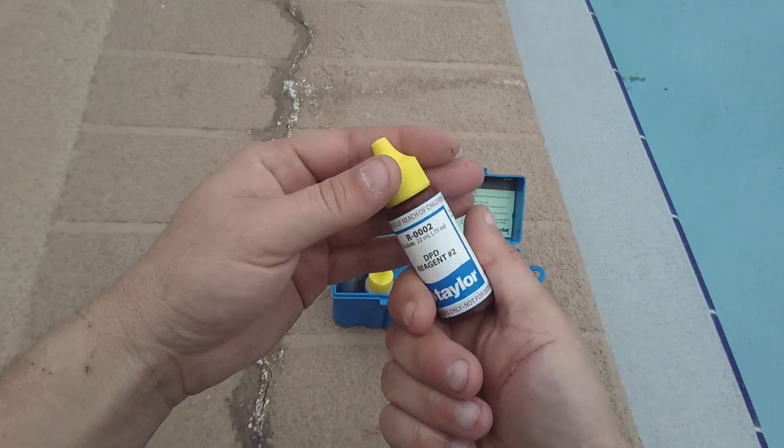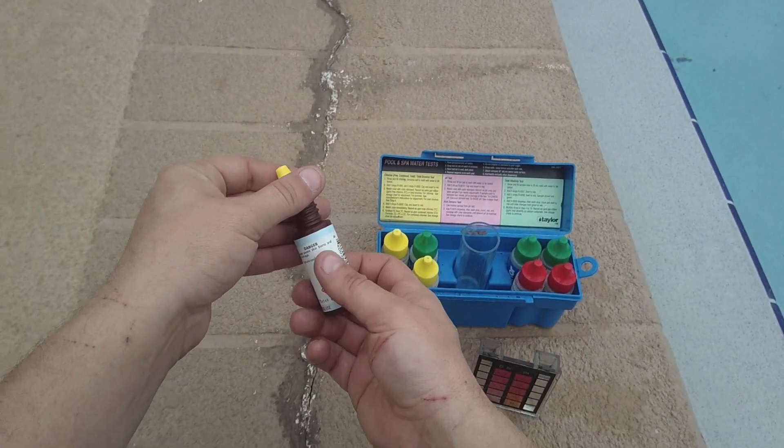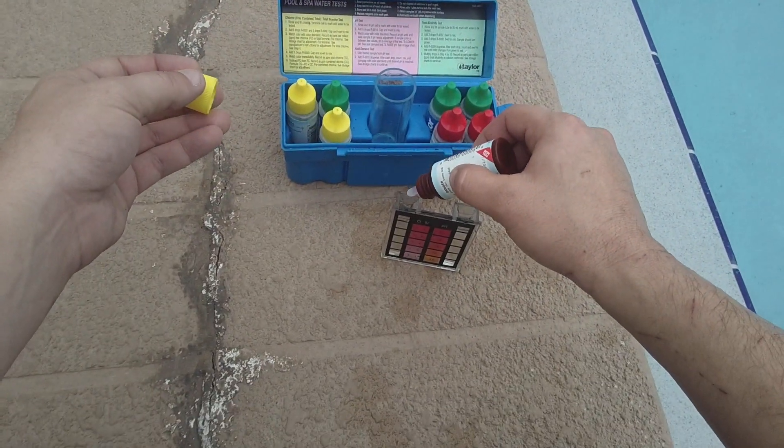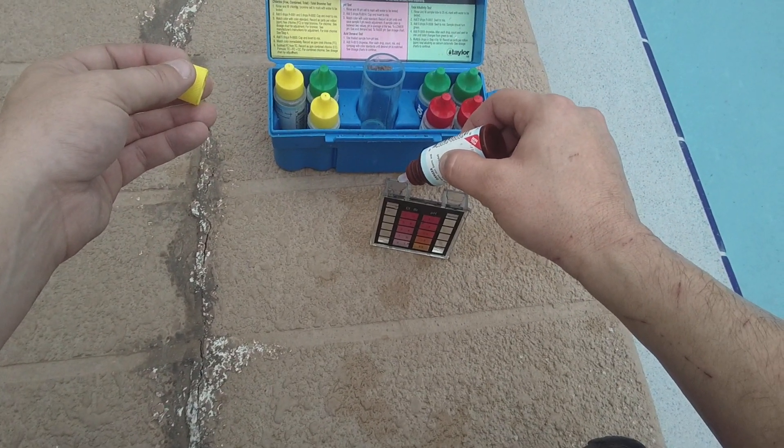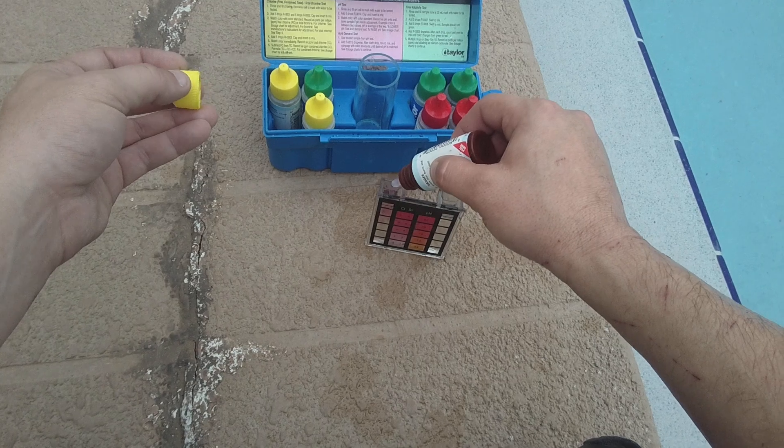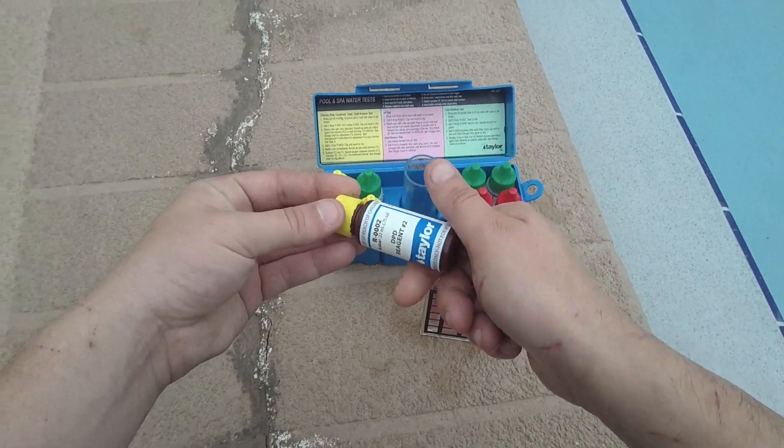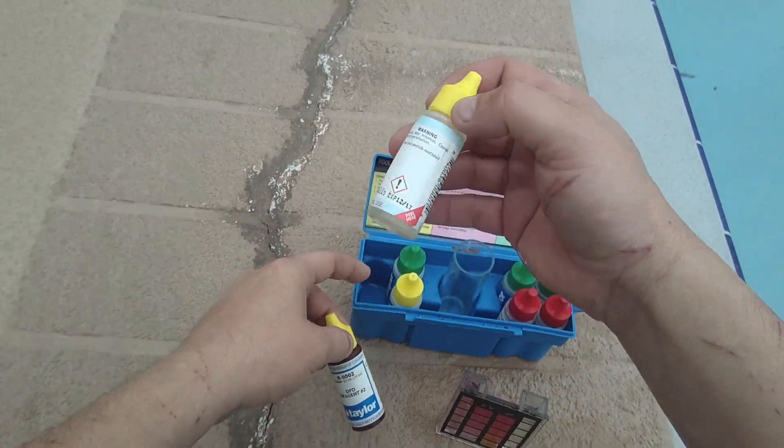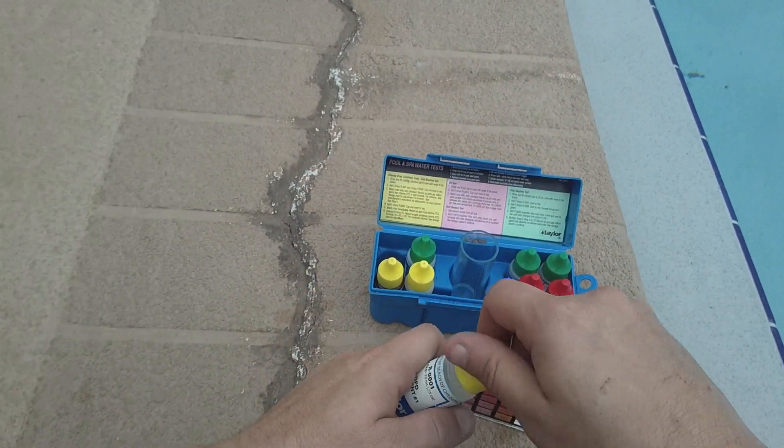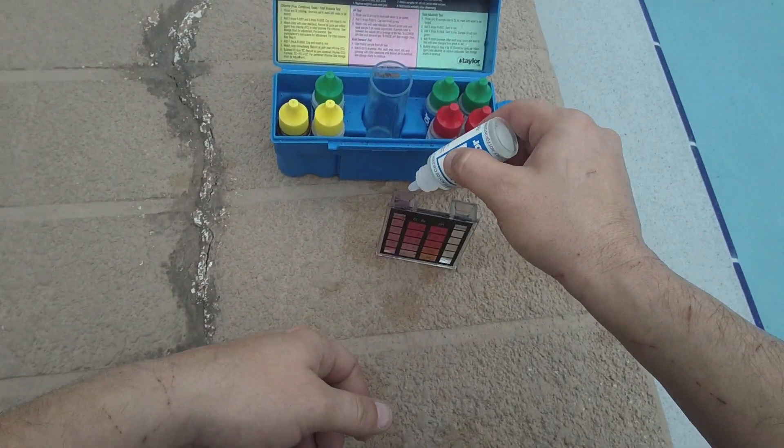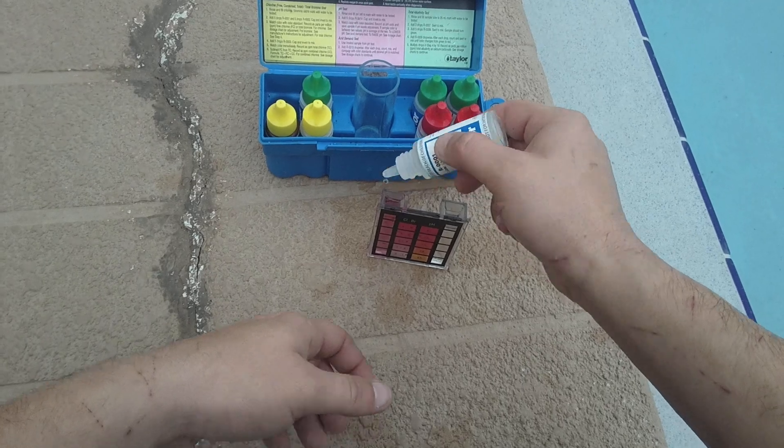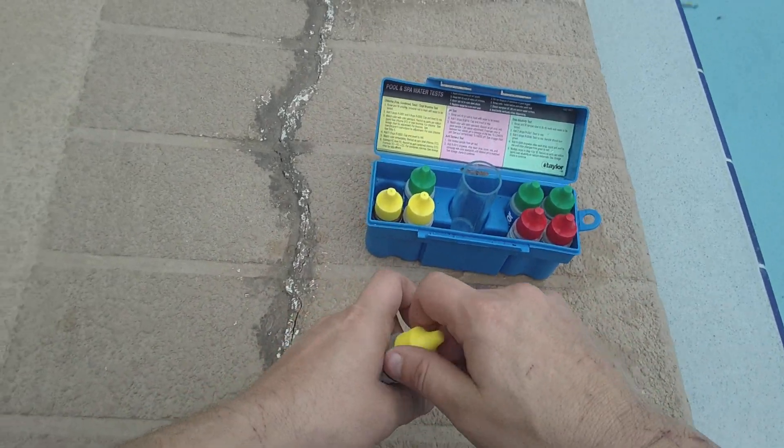So this side says it's really easy, just follow the instructions. It says to add five drops to this: one, two, three, four, five. And it says five drops of reagent one and two: one, two, three, four, five - almost put six in there.